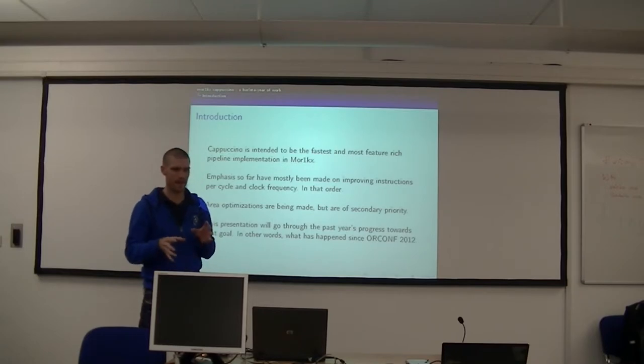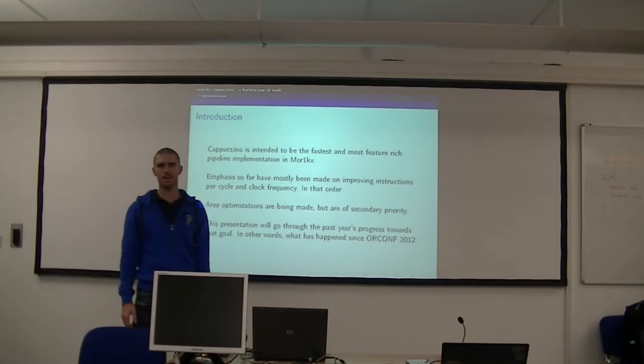Ok. So I've done this presentation. More 1KX Cappuccini and Barista here at work because it's been brewing for a year. So first short introduction what Cappuccini is. It started out as a modification of Julius's, as he mentioned, the 4 slash 5 stage pipeline and has been extended from that. So some things in it have heritage from that. The point of it is to try to make it fast and efficient and still keeping it relatively small. So that's the purpose of the Cappuccino pipeline. But area isn't the main concern for me. I want to make it faster in terms of instructions per cycle and how fast you can synthesize it, maximum frequency.